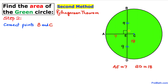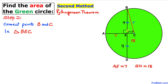In the next step, let's connect points B and C to form a triangle. Calling radius BC lowercase R, and noting that EC equals R minus 7, we can see triangle BEC is a right triangle, so we will apply the Pythagorean theorem.